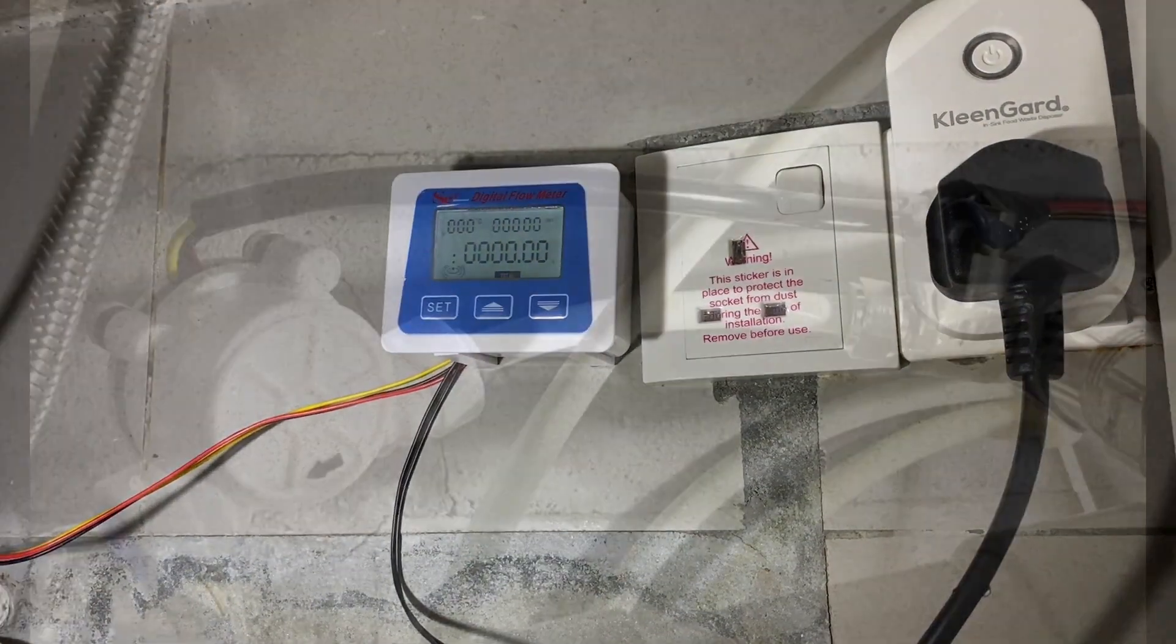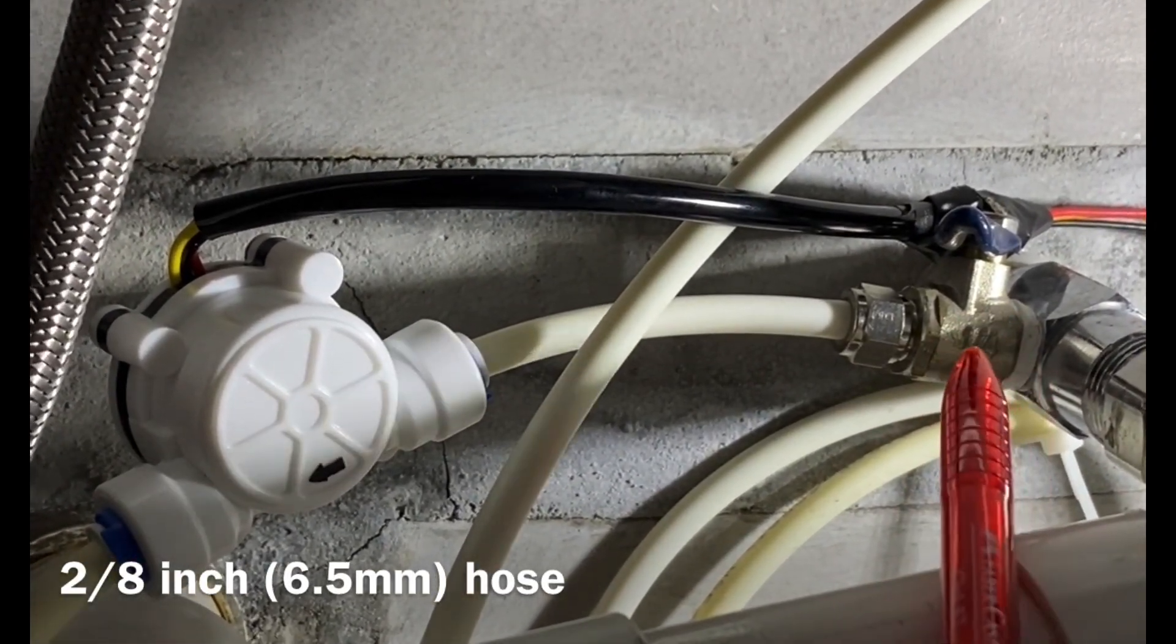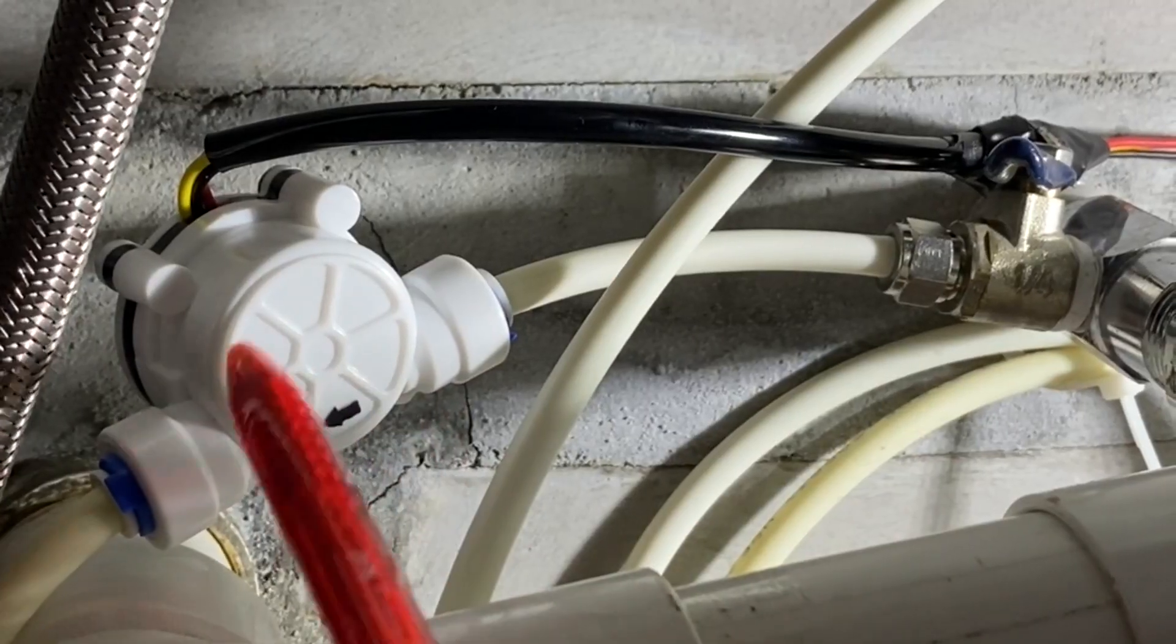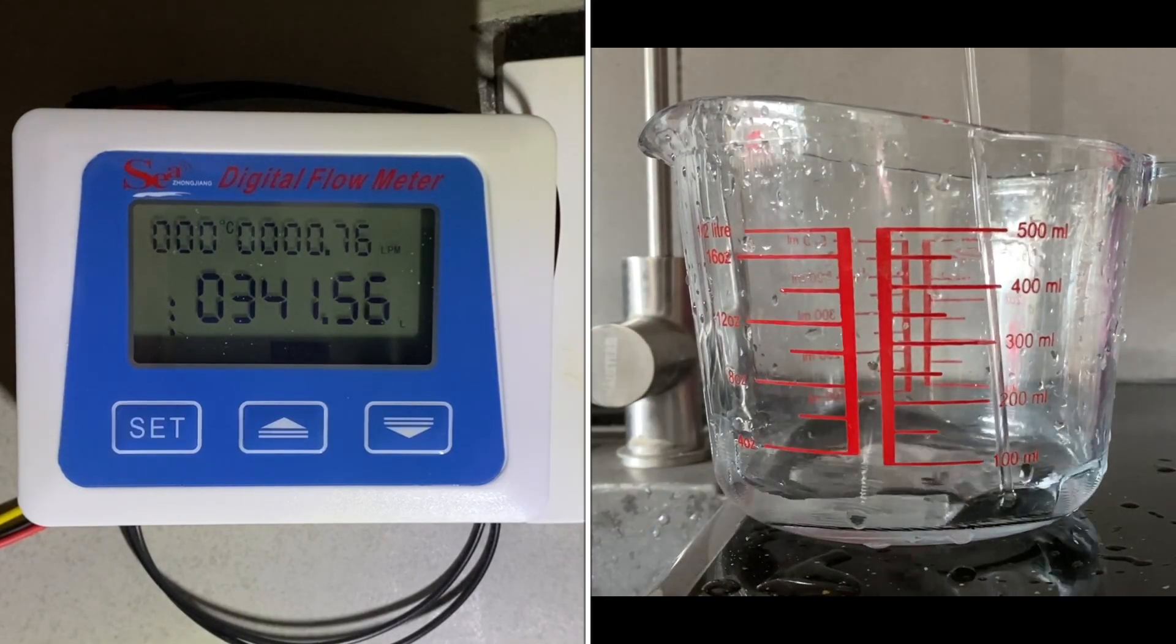So this water flow meter works like this. It works on existing water line. Water passes through the sensor, and then the data is sent into the microcomputer.